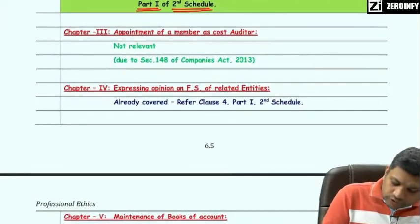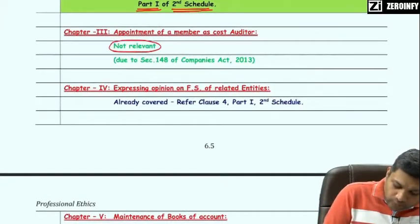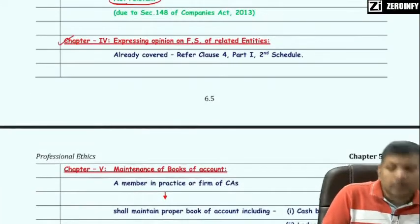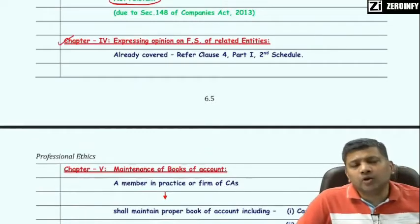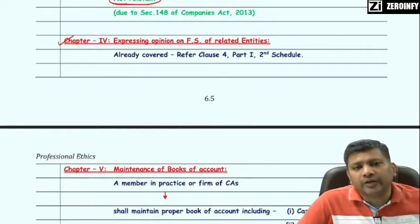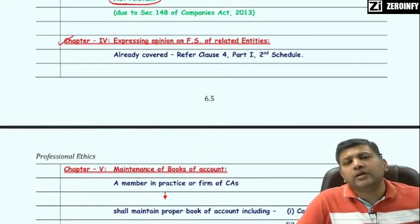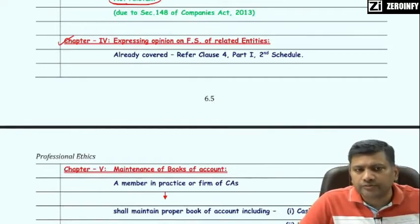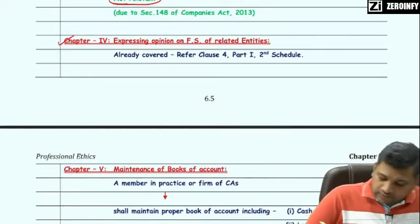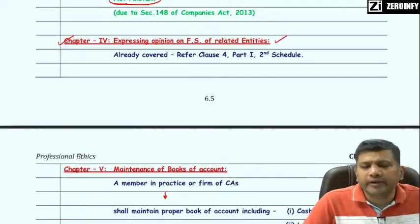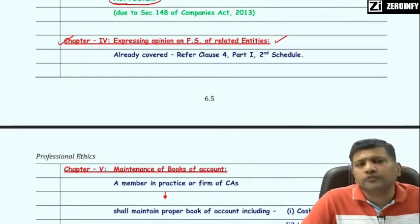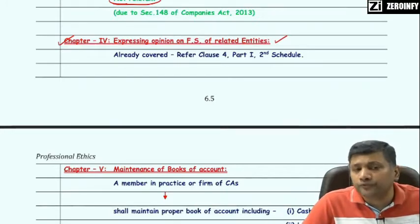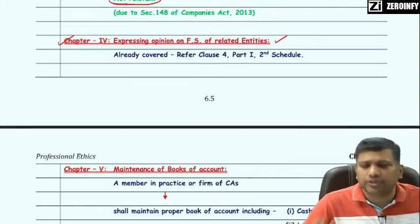Chapter 3: Appointment of member as Cost Auditor — not relevant now. Chapter 4: Expressing opinion on the financial statement of an entity in which a relative is holding substantial interest. This chapter has already been covered along with Clause 4 of Part 1 of the Second Schedule.